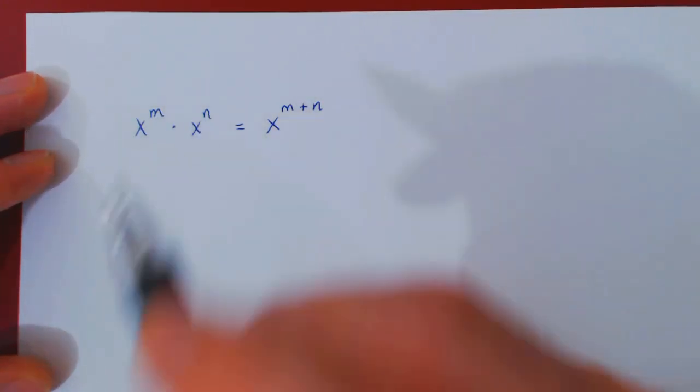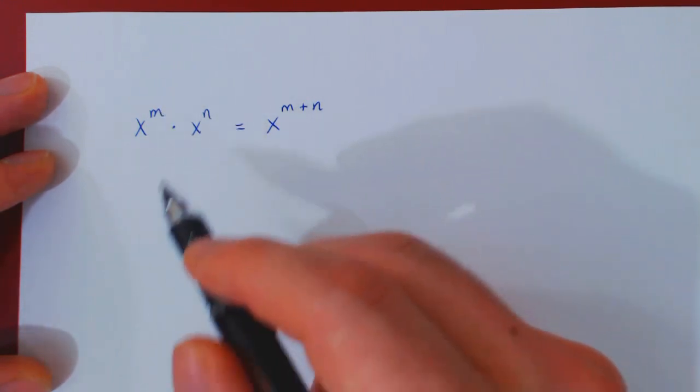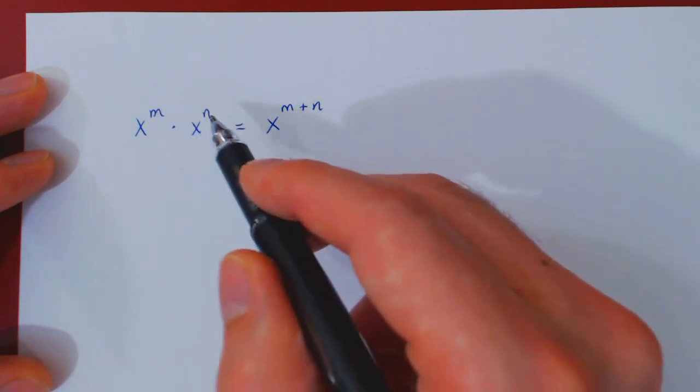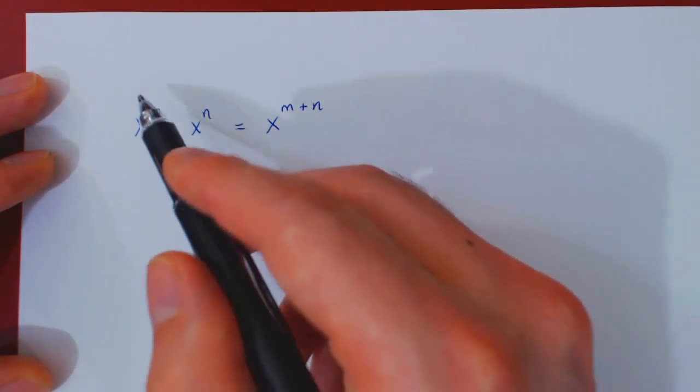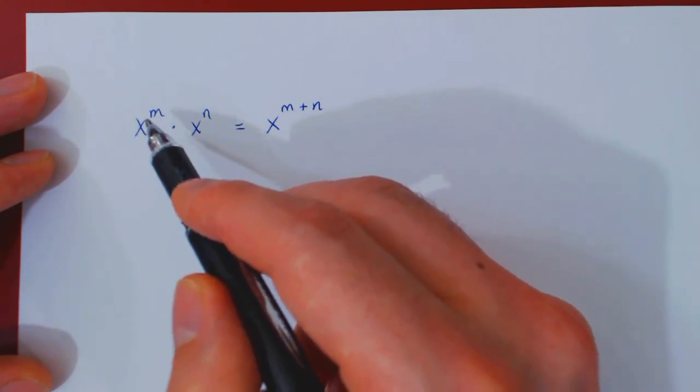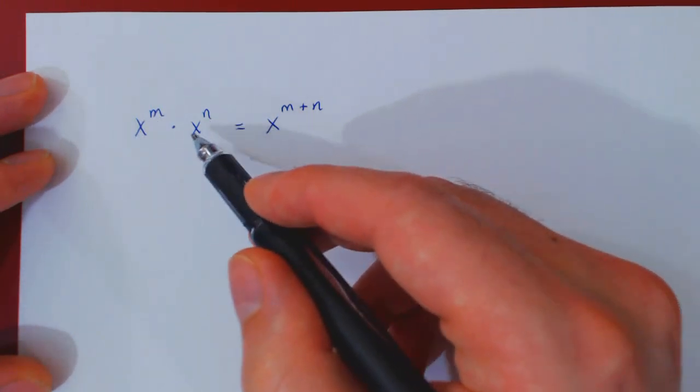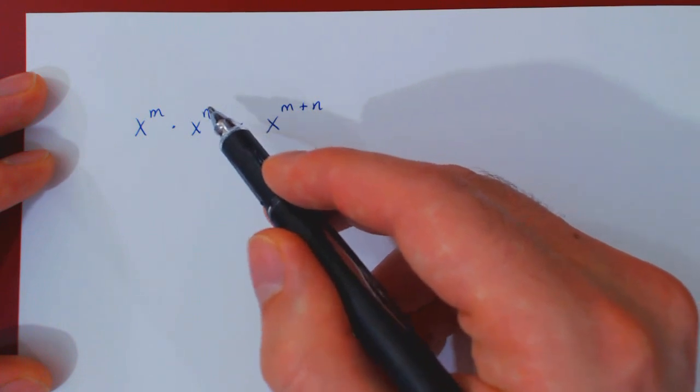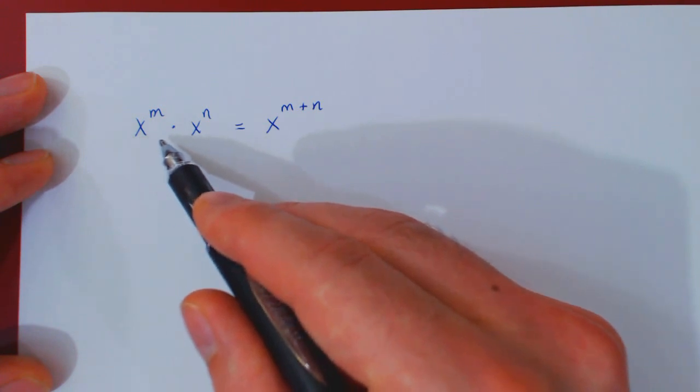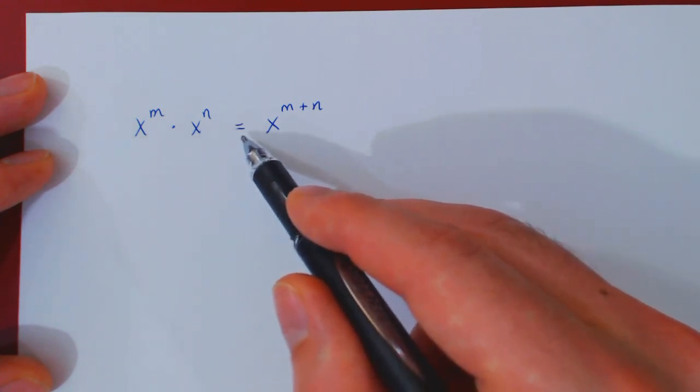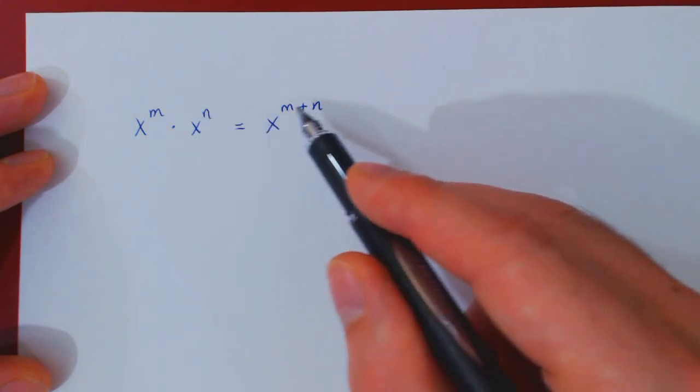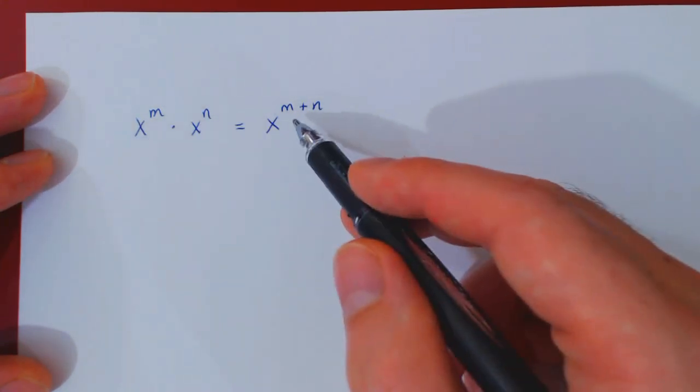And this is true for any two real numbers m and n, and if you think about why this is very intuitive, in the case where m and n are positive integers, by definition, x to the m is m x's multiplied together, and by definition, x to the n is n x's multiplied together. So what we have here is m x's times n x's, so we have a total of m plus n x's. And to make this more concrete,